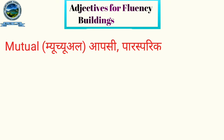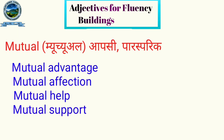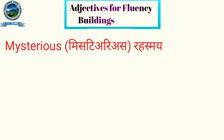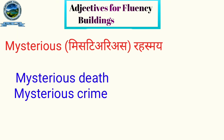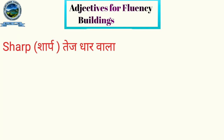Next we have 'mutual' — for example, mutual advantage, mutual affection. And 'mysterious' — for example, mysterious death, mysterious crime.